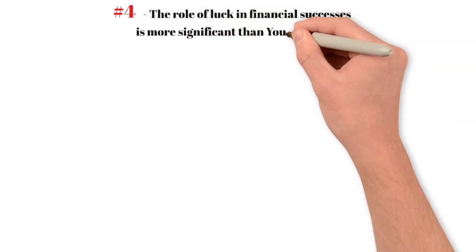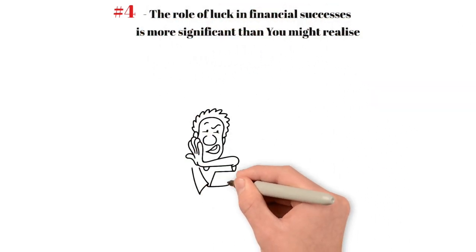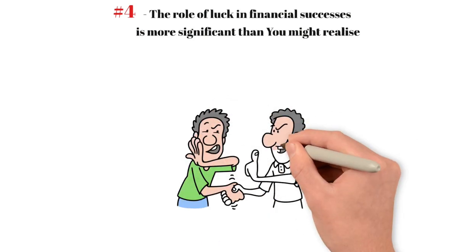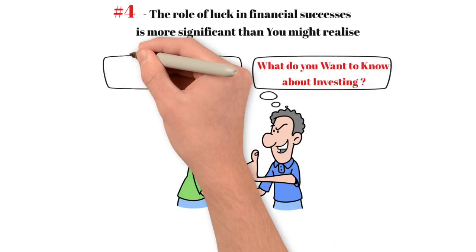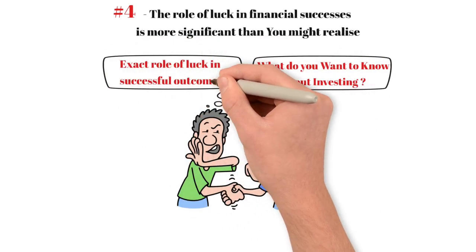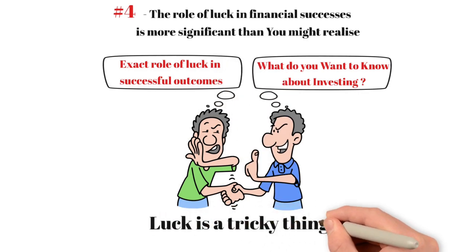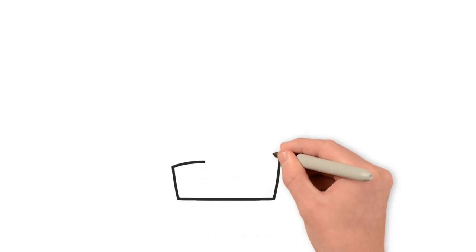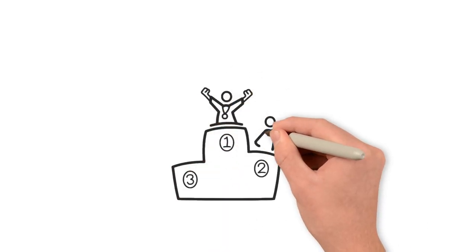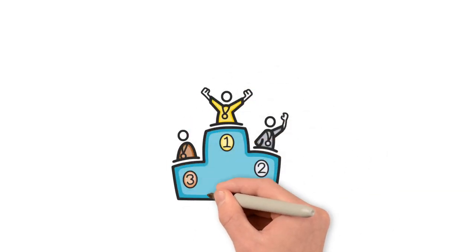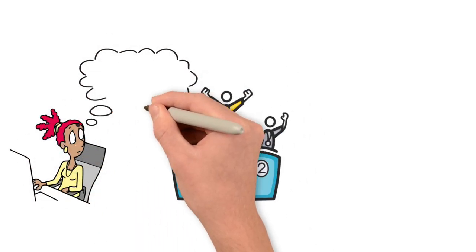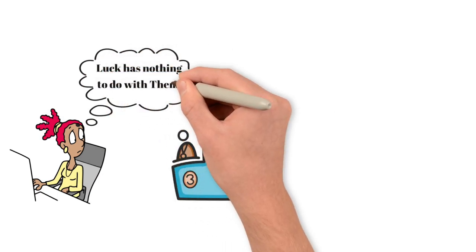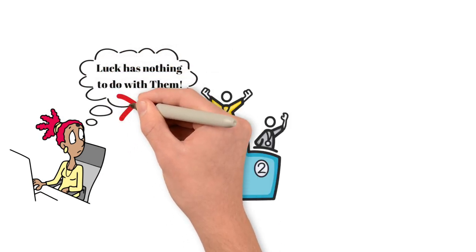Number four: The role of luck in financial successes is more significant than you might realize. A couple of years ago, the author asked Nobel Prize-winning economist Robert Shiller what he'd most like to know about investing that can't be fully known. Shiller's response was the exact role of luck in successful outcomes. Luck is a tricky thing. While many investors and entrepreneurs acknowledge its role in theory, it's challenging to measure how much it contributes to the success of one company over another. People often find it impolite to attribute others' success to luck, so we often overlook the role luck plays in financial decision making. And that, according to the author, is a mistake.